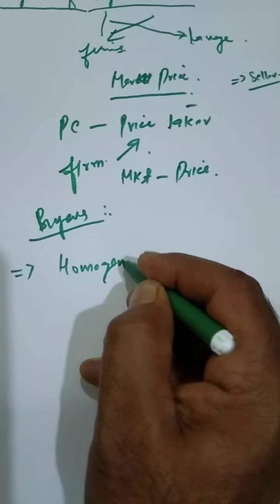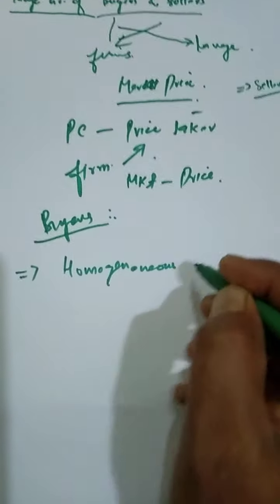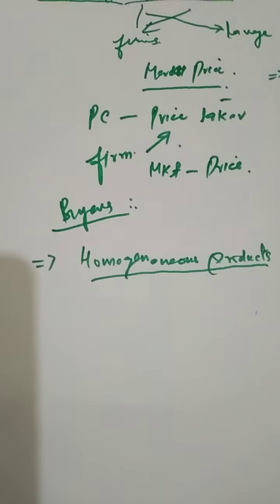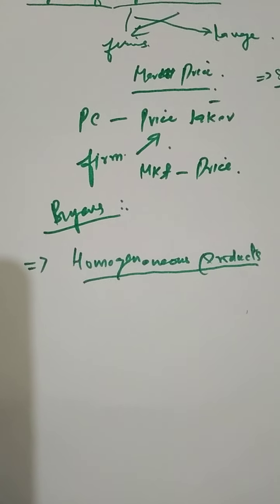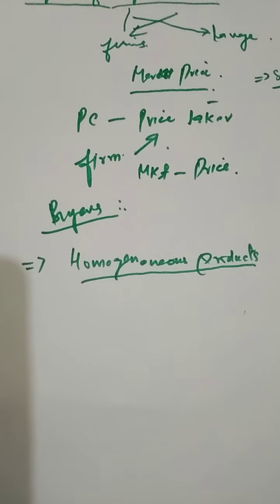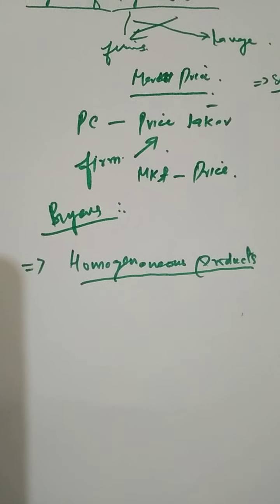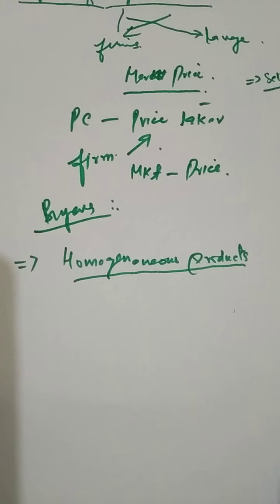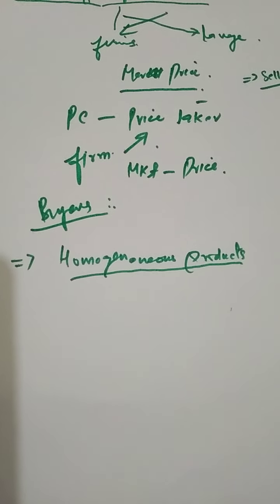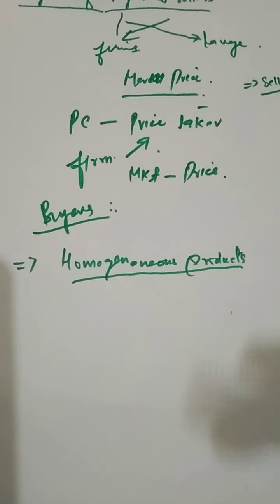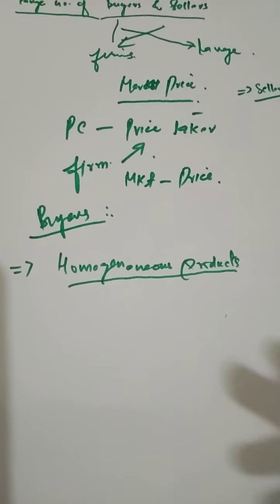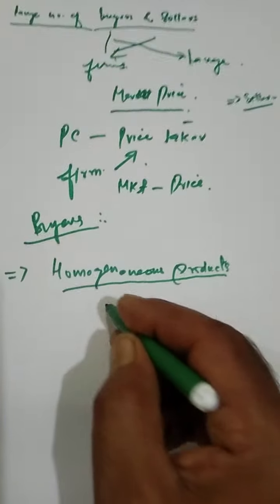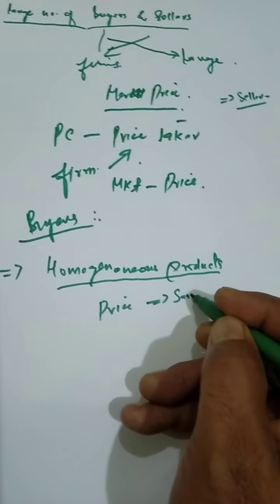Homogeneous products is the next feature or characteristic of perfect competition. Since products are identical, buyers have no reason to prefer the product of one seller to that of another. The products are the same, so the price of the product is uniform throughout the market. This feature leads to the conclusion that the price prevailing under perfect competition is the same across all sellers.